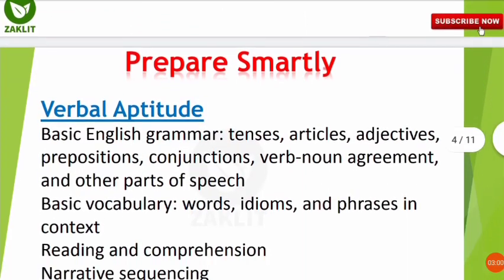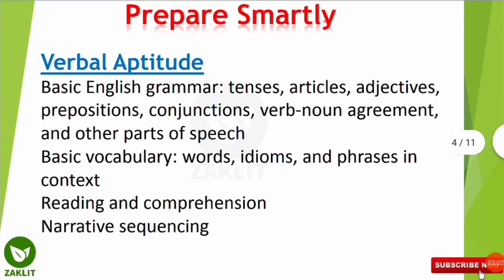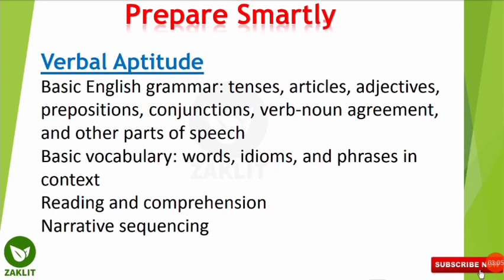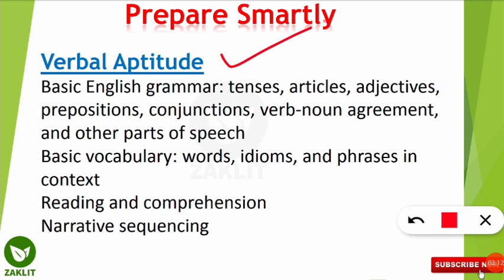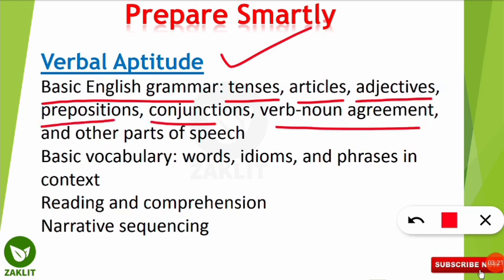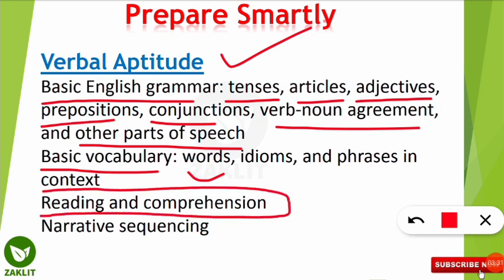Now we will discuss smart preparation techniques. The syllabus has four parts in the general aptitude section. The first part is verbal aptitude, which includes basic English grammar — tenses, articles, adjectives, prepositions, conjunctions, verbs, nouns, agreement, and other parts of speech — as well as basic vocabulary covering synonyms and antonyms, reading comprehension, and narrative sequencing.